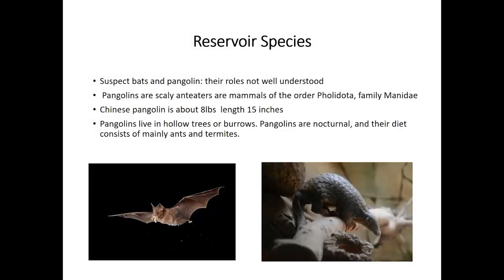Regarding reservoir species: unlike its family members, SARS coronavirus has been isolated from bats and civet cats — during the 2002–2003 SARS outbreak, approximately 10,000 civet cats were slaughtered. With the 2012 MERS outbreak, we saw transmission between camel and human. With the current outbreak, COVID-19 has been isolated from bats and pangolins. A pangolin is a small, scaly animal about 15–16 inches in length that burrows into trees, is primarily nocturnal, and is an anteater.